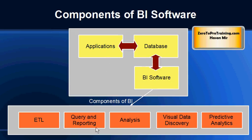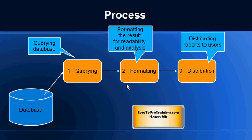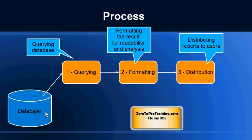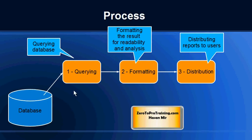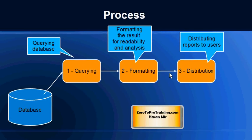Typically a business intelligence software would include components such as ETL, which we talked about in the previous session, and in this session we'll talk about querying and reporting. When we use the term querying and reporting we are talking about a process consisting of three steps: querying, formatting, and distribution. By querying we mean retrieving data from the database, which could be an OLTP or OLAP database. Once useful data has been retrieved, we need to format it for better readability and to make it ready for analysis — that is step two, formatting.